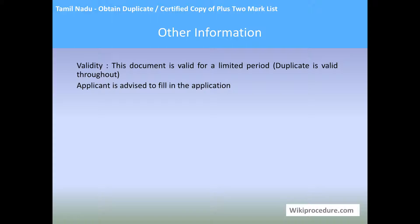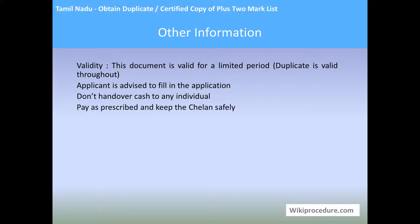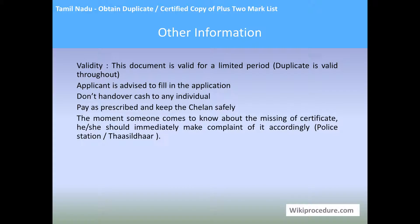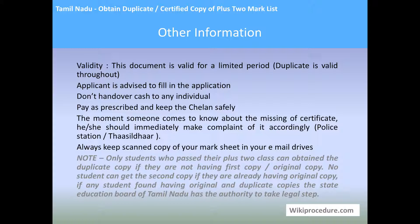Other information — Validity: The duplicate document is valid throughout, but the certified copy is valid for a limited period; this is the primary difference between the two. Applicants are advised to fill the application on their own; don't hand over cash to any individual; pay as prescribed and keep the chalan safely. The moment someone knows about the missing certificate, they should immediately make a complaint to the school, police station, or tahsildar's office. Always keep a scanned copy of your mark sheet in your email or drives. Note: only students who passed their plus two class can obtain a duplicate copy if they do not have the original. No student can get a duplicate if they already have the original; if any student is found having both, the state education board of Tamil Nadu has the authority to take legal steps.